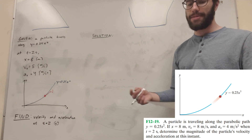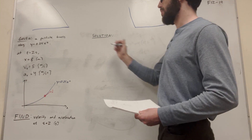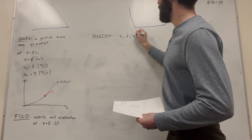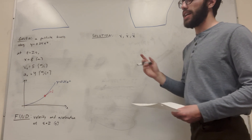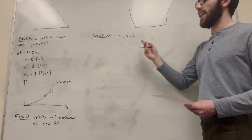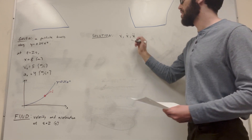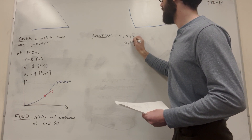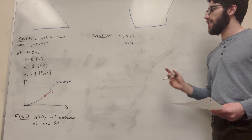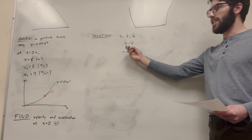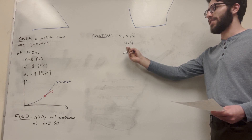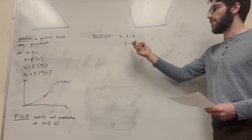So let's get started. What are we given? We're given x, x-dot, and x-double-dot — that is, position, velocity, and acceleration in the x direction. To find velocity and acceleration, we're going to need to find y-dot and y-double-dot. These are our goals: y-dot is velocity in the y direction, and y-double-dot is acceleration in the y direction.